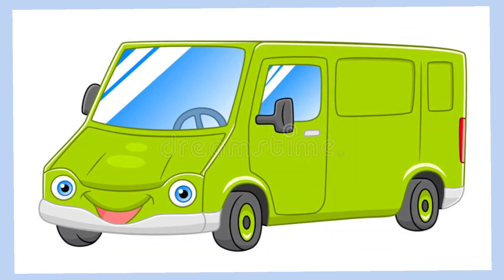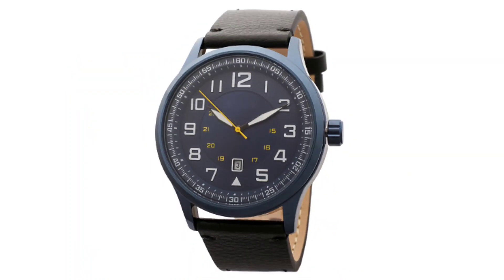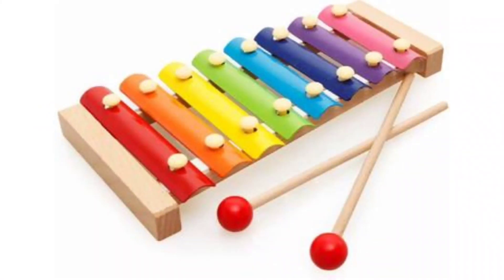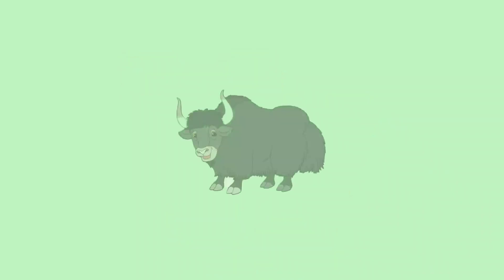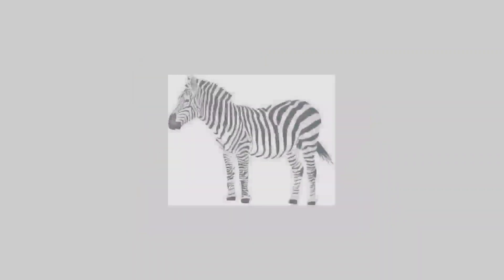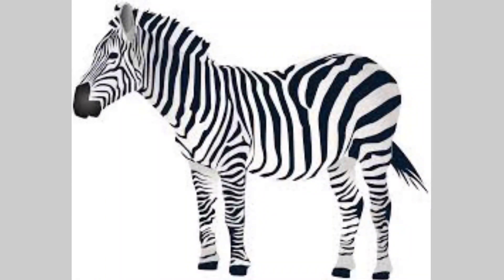U for Umbrella. V for Van. W for Watch. X for Xylophone. Y for Yak. Z for Zebra.